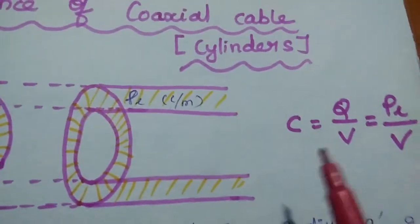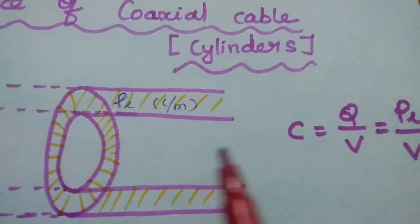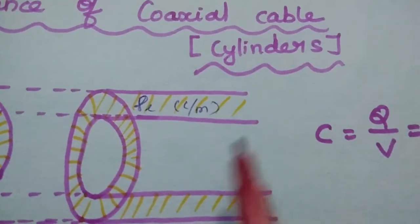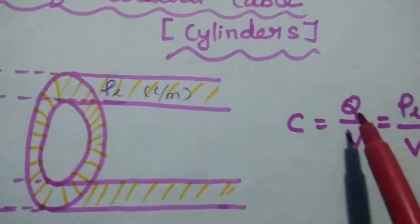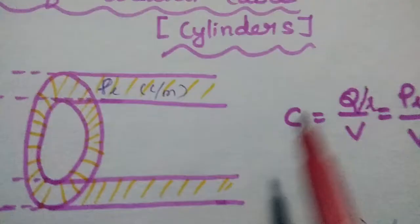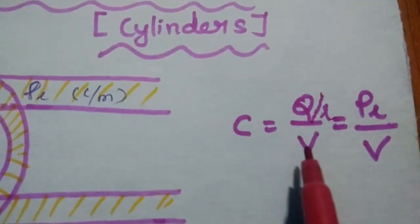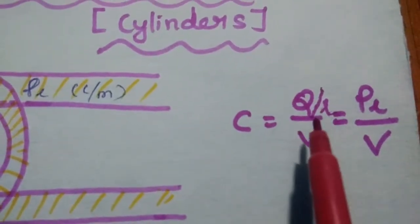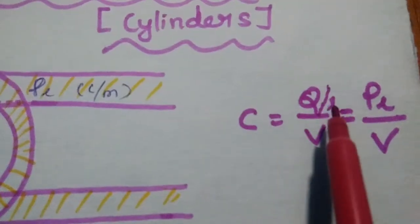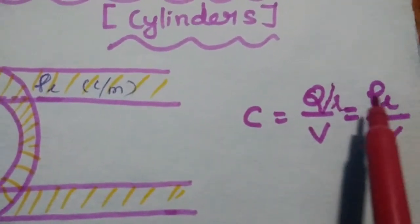Generally we know that the capacitance formula is Q by V. But here the coaxial cable is a cable which has a certain length, so we are going to consider the capacitance charge in terms of charge per length. We are going to consider one unit length. So in case of coaxial cable, instead of saying Q by V, the capacitance is denoted as Q by L — that is charge per unit length — divided by V. So charge per length is nothing but line charge density Rho L.